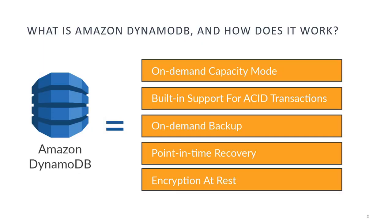What is Amazon DynamoDB and how does it work? Amazon DynamoDB is a fully managed NoSQL database service offered by AWS. It is designed to provide high performance, scalable storage and retrieval of data using key-value and document data models. DynamoDB uses a distributed architecture that provides fast and consistent performance by spreading the data across multiple servers.